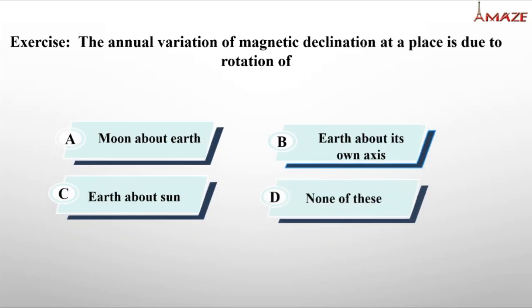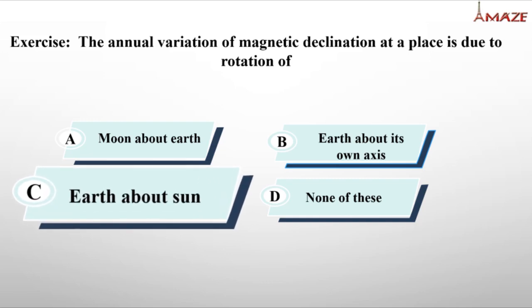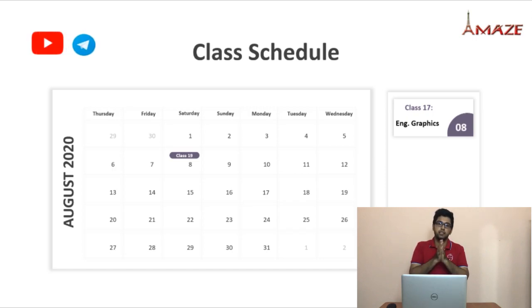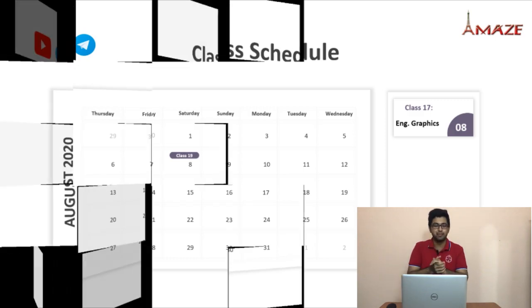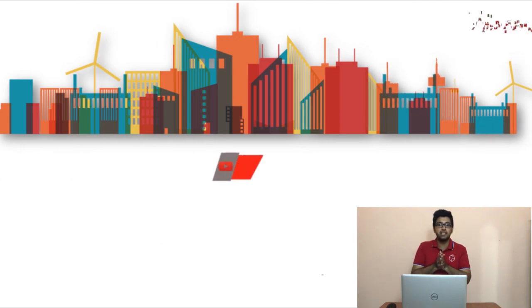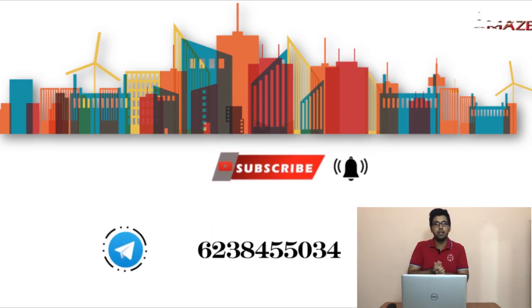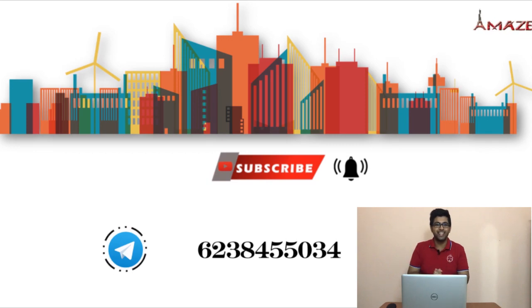Annual variation of magnetic declination at a place is due to the rotation about the sun — option C. Friends, the 2nd engineering graphics first part was uploaded on August 8th. Please like, share, and subscribe to our channel. Share especially during exam time. Bye!